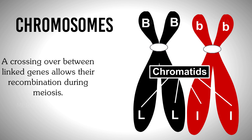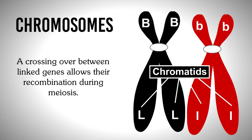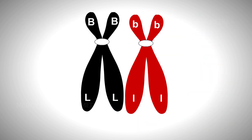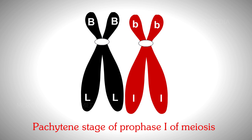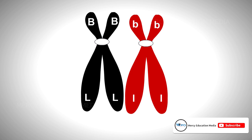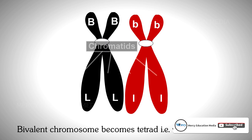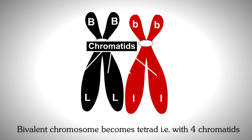A crossing over between linked genes allows their recombination during meiosis. Crossing over takes place in the pachytene stage of prophase I of meiosis. In the pachytene stage, the bivalent chromosome becomes a tetrad, that is, with four chromatids.